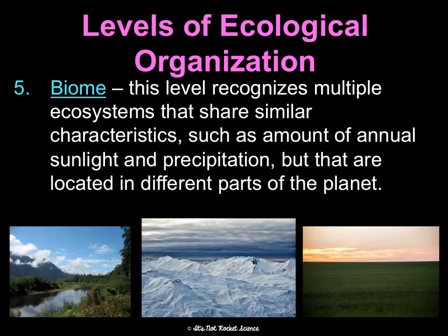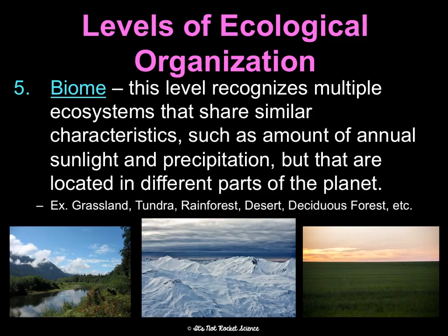Next is the biome level — multiple ecosystems that share similar characteristics but are in different parts of the planet. They may have similar sunlight, precipitation, and types of organisms. Examples include grasslands, tundra, rainforests, and deserts. There are deserts in North America, Africa, and Asia — that's a biome. We'll do a biome activity to explore these further.